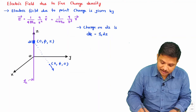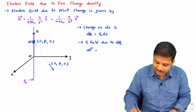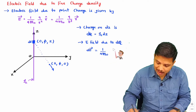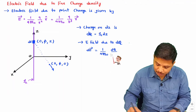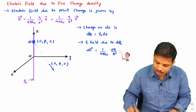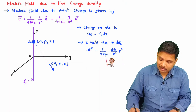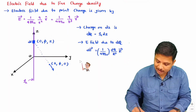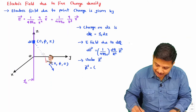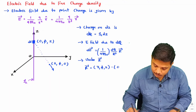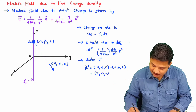This dq charge will produce a certain amount of electric field dE. As per the basic formula, dE equals 1 by 4 pi epsilon 0 into dq divided by R cubed into vector R, where the direction is along vector R. Vector R is head minus tail — so it becomes (r, 0, minus z) in cylindrical components.